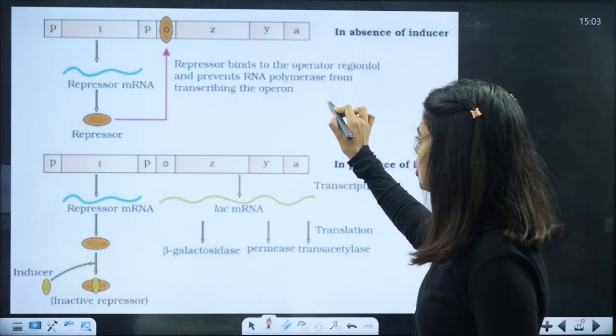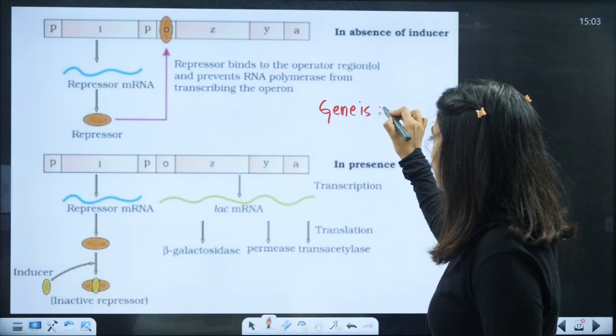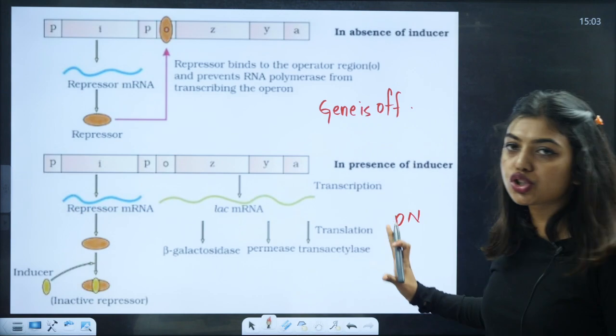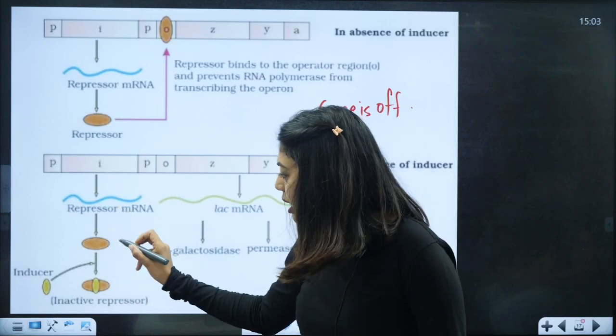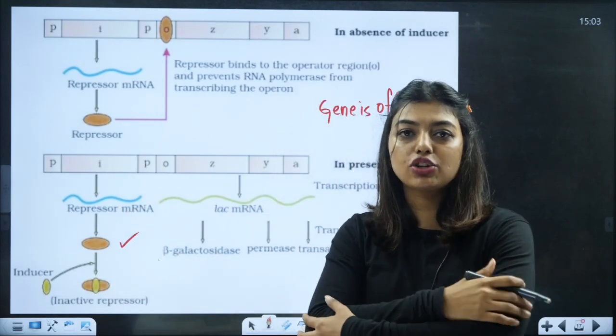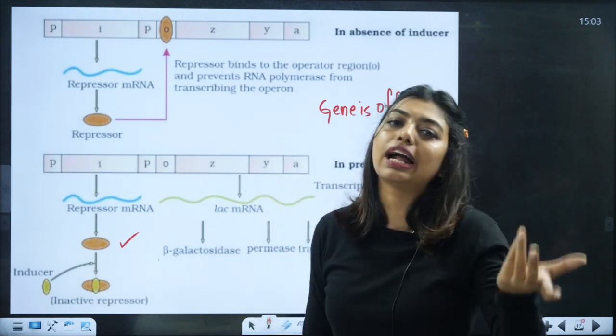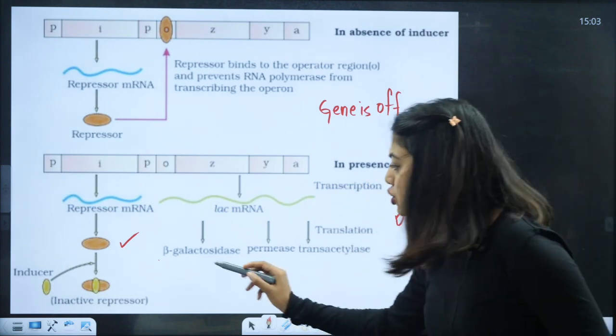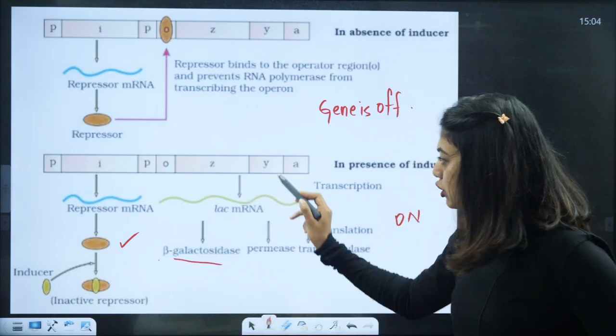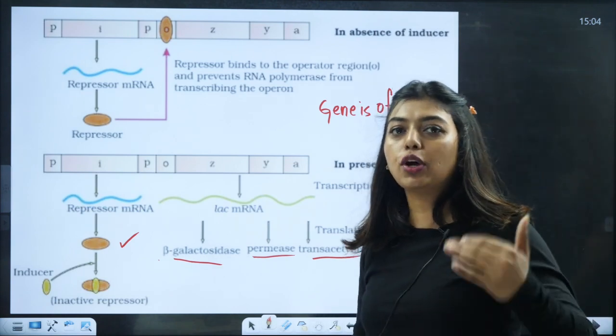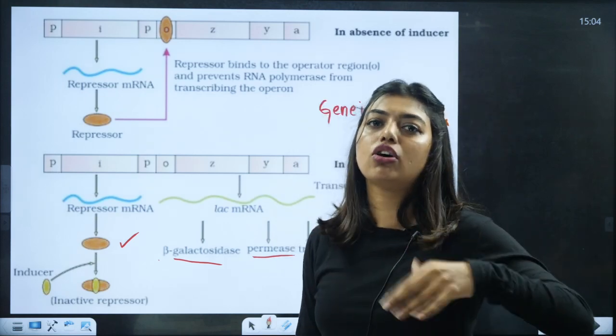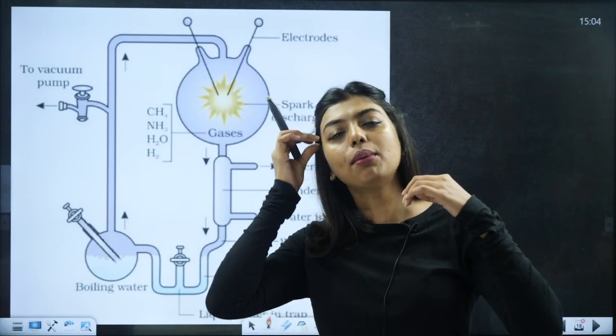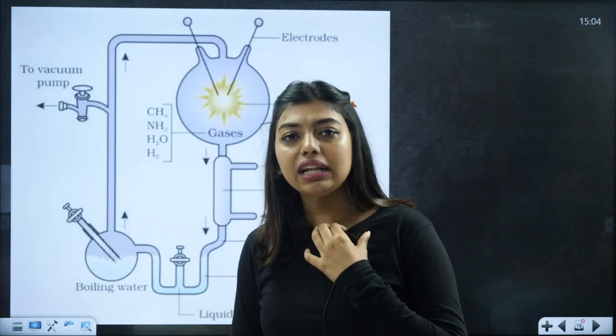This diagram shows when the gene is switched off. This is the situation where gene is on. Repressor mRNA will form repressor, inducer comes and repressor goes away. The inducer is lactose. This will form lac enzymes because transcription and translation have happened. Z codes for beta-galactosidase, Y for permease, A for transacetylase. Lac operon may come as five mark question - they may ask you to draw diagram or explain it.